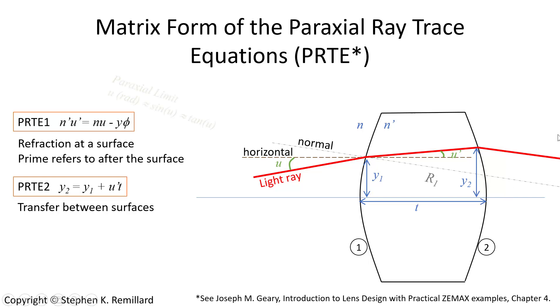Both of these are written in the paraxial limit, which is the small angle approximation, so the angle u relative to the horizontal is equal to its sine and is equal to its tangent, as long as u is in radians.